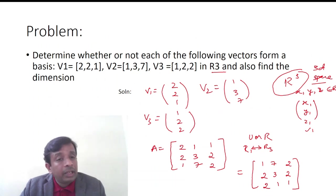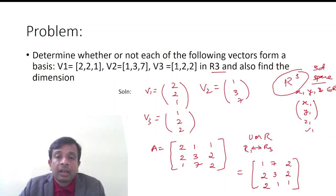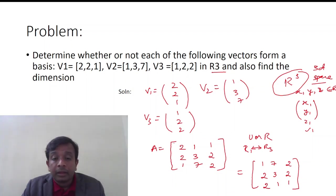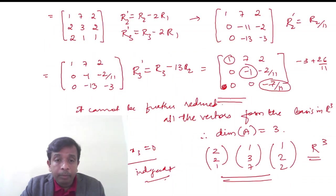We can understand this concept with a problem. Three vectors are given: [2, 2, 1], [1, 3, 7], and [1, 2, 2]. When they are put as matrix A, we go ahead and try to reduce it to echelon form.